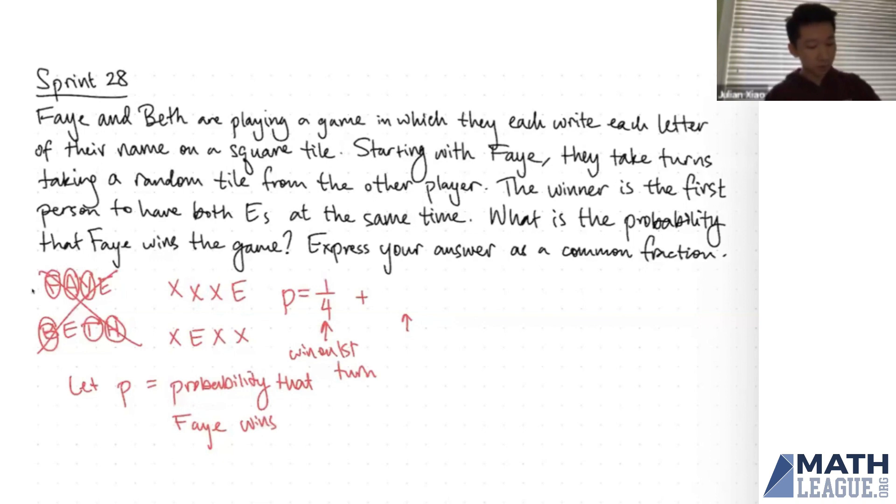So if there's a one-fourth chance that Faye wins on the first turn, then there's a three-fourths chance that the game will continue for a little bit longer. So three-fourths is the probability that Faye chooses one of the other tiles. So in this case, Faye will choose an X from Beth's hand.